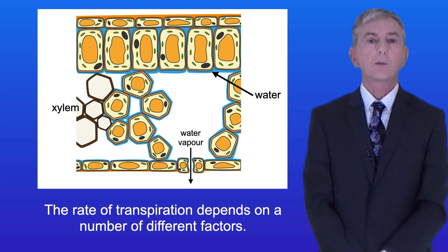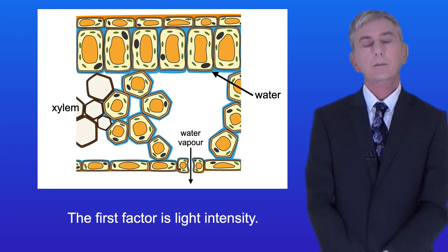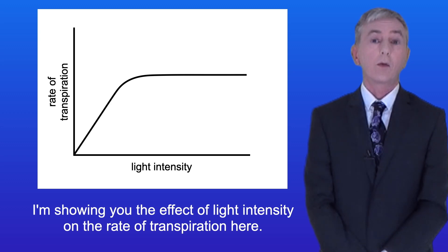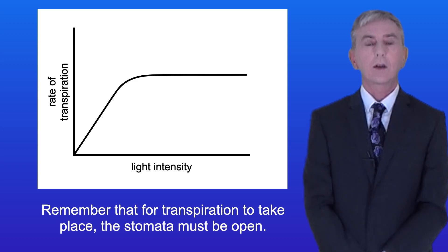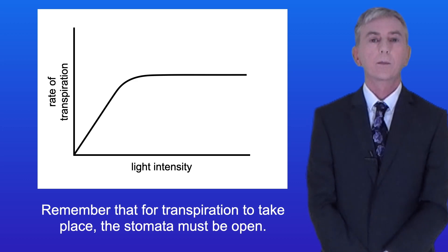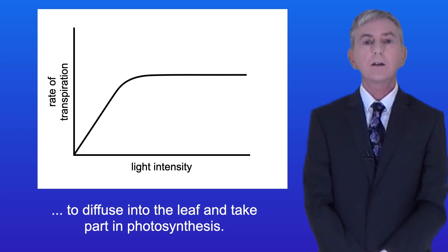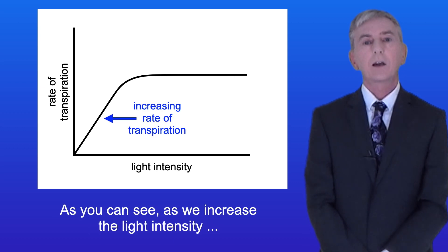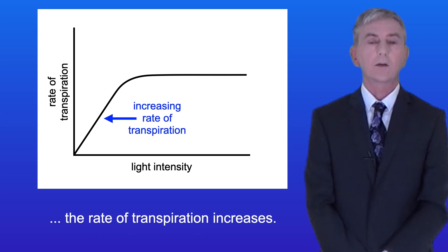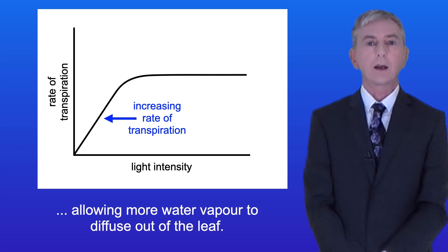The rate of transpiration depends on a number of different factors. The first factor is light intensity. Remember that for transpiration to take place the stomata must be open. Stomata open in light conditions to allow carbon dioxide to diffuse into the leaf and take part in photosynthesis. As we increase the light intensity the rate of transpiration increases, because increasing light intensity increases the number of open stomata, allowing more water vapor to diffuse out of the leaf.